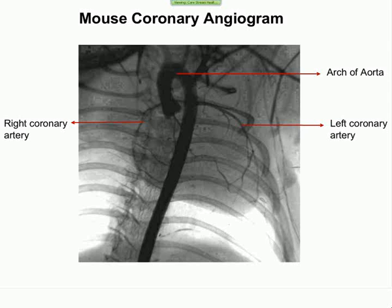This slide shows the mouse coronary angiogram at a better field of view — the previous one was around 120mm field of view, and this one is around 40mm. Here you can clearly see the coronary arteries: this is the left coronary artery, this is the right coronary artery, and on the top you can see the carotids and other brachiocephalic arteries. Based on this technique, I previously published a research article showing the difference in aortic banding, like pressure overload in mouse models — where you can see collaterals opening and increasing vascular density.